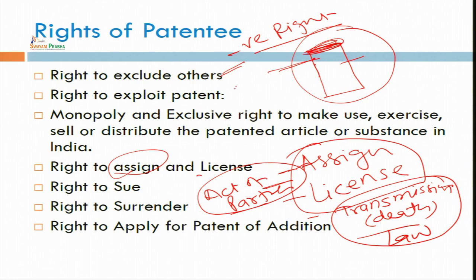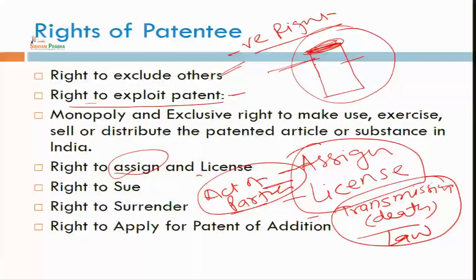The right to exclude others is a negative right. You also have the right to exploit the patent. Because now you have a monopoly right, you can do whatever you want with that particular patent — you can take commercial benefit of it for 20 years. You have the exclusive right already there with you. You can also exercise the right to sale: you can distribute the patented article or substance in India.